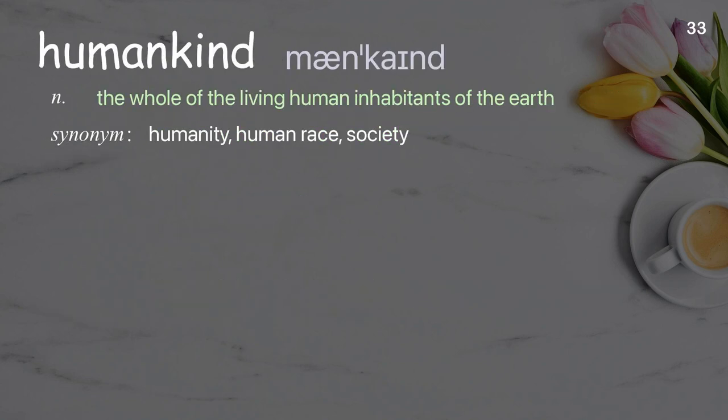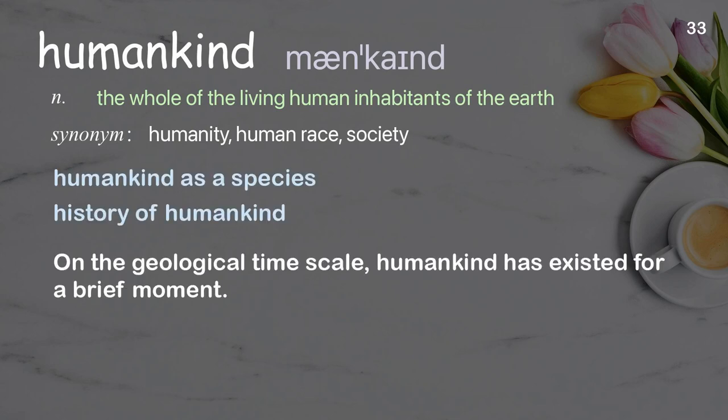Humankind: The whole of the living human inhabitants of the earth. Examples: Humankind as a species. History of humankind. On the geological time scale, humankind has existed for a brief moment.